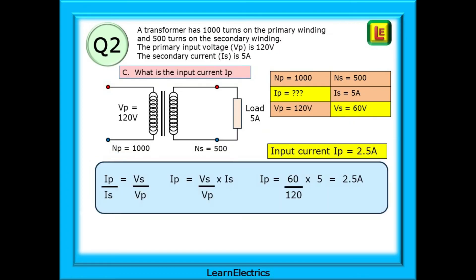And now part C, what is the input current IP? Again, use formula number 1. We know both voltages and we know IS, the secondary current. By rearranging to make IP the subject, we can now enter the numbers into the equation. The input current IP is 2.5 amps.